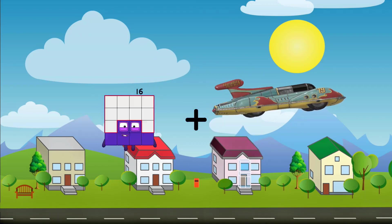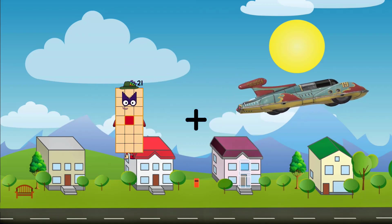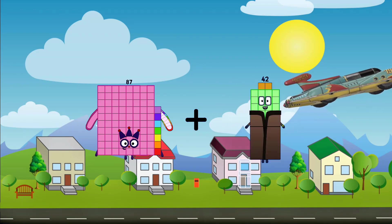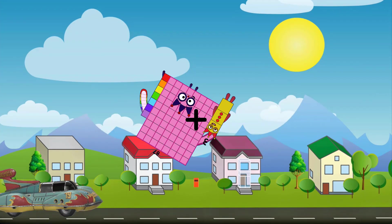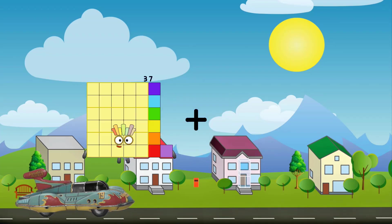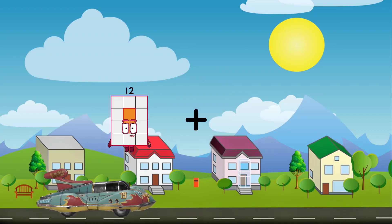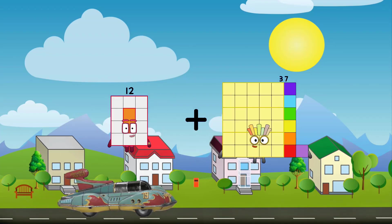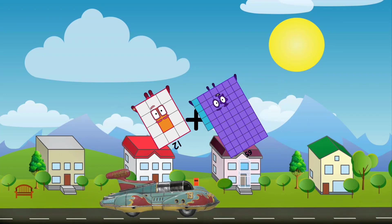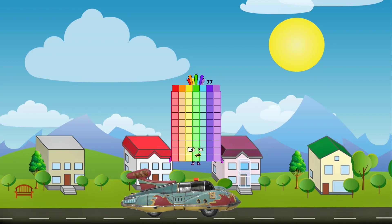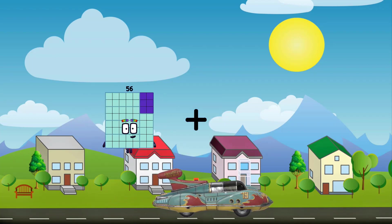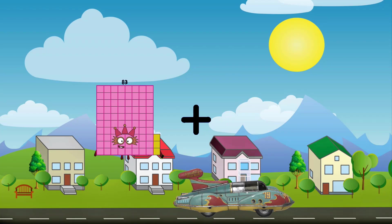155. 3 equals 90. 12 plus 65 equals 77. 83.